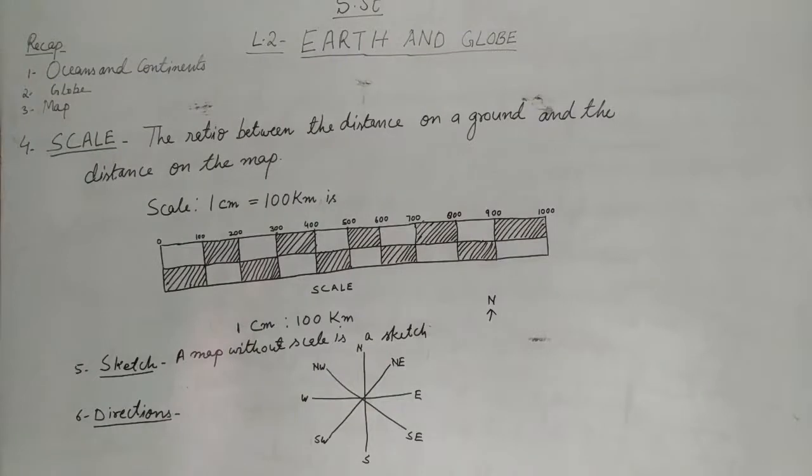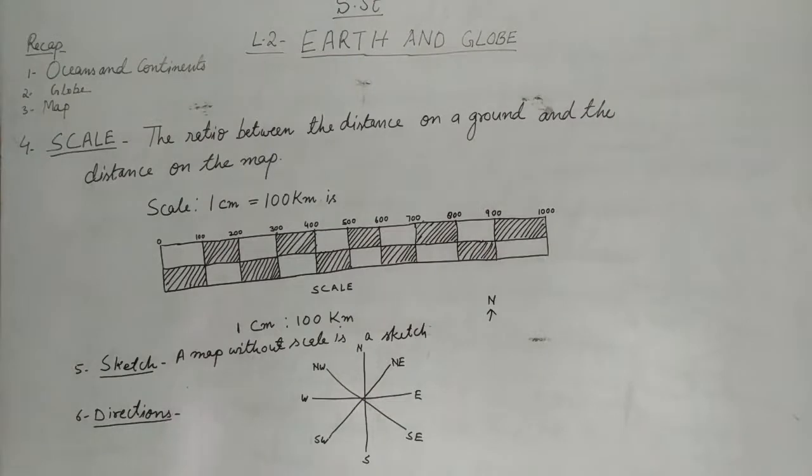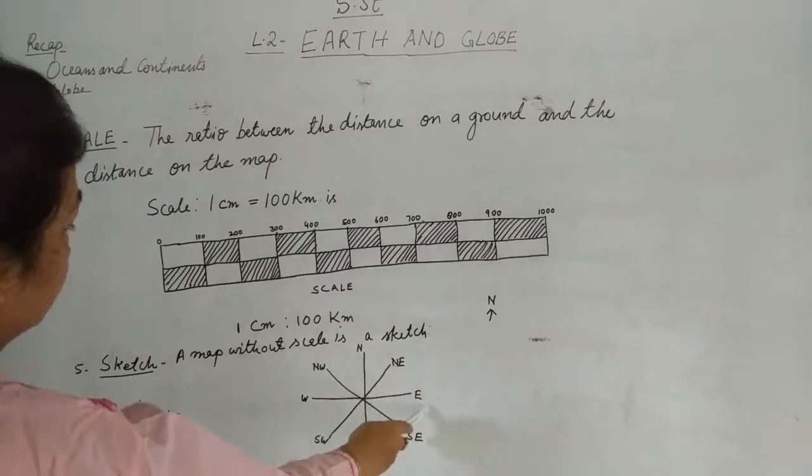If you know the north direction, then you will find other directions easily. So you will find other directions easily. Let us see. Well, the direction that is exactly opposite to the north, that is south. Next direction that is to the right, right direction is the east. And the left of the north is the west direction. North, south, east, west.